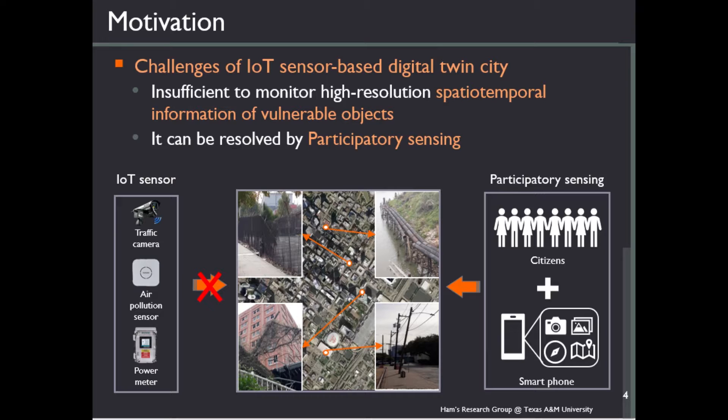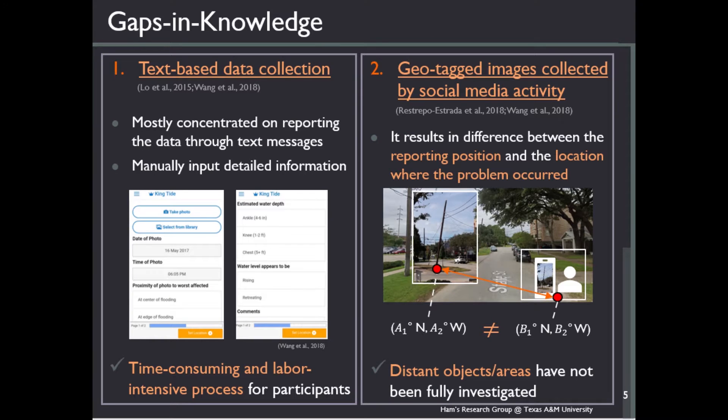To address these challenges, participatory sensing would be a great alternative way for collecting large-scale data to understand the current state of large urban areas for disaster management. But still, current participatory sensing for city monitoring has several limitations.